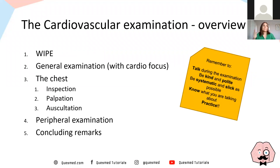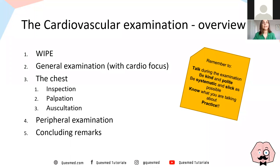Here's a quick overview — this is pretty much the usual layout for all your examinations. You always start with WIPE, then do a general examination with a cardiovascular focus. Remember you're going to be time-limited — we had about six minutes, maybe even less by finals. So pick the important things from the general examination, then move on to the chest: inspection, palpation, auscultation, a quick peripheral examination, and then your concluding remarks.